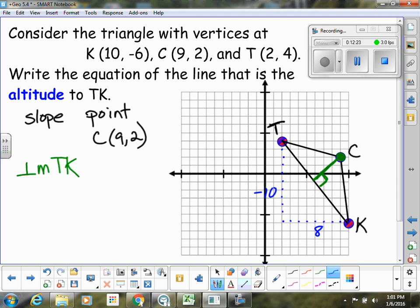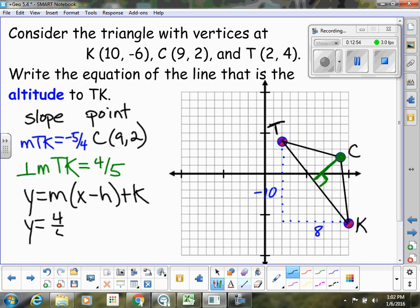So the perpendicular slope, remember, is the opposite reciprocal. So I'm going to flip that fraction around and make that positive. So that would be positive 4 fifths. So in order to make my equation, I'm just going to use my point-slope formula. So I'm going to have 4 fifths and then X minus 9 plus 2. And depending on what format they wanted, you could distribute and put that in slope-intercept form. But that would be an acceptable equation of the line.